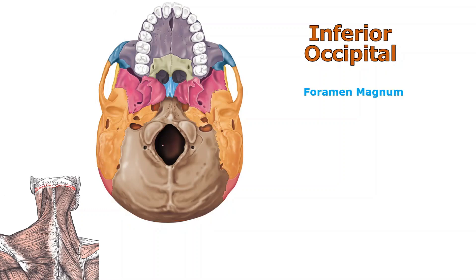The foramen magnum is pretty easy. If you translate it, it stands for 'big hole.' The foramen magnum — I've put FM inside of it — is the landmark where inside the skull we have the brainstem, and beyond the foramen magnum on the outside is what's called the spinal cord. It's the same structure, but it gets a different name once it exits the foramen magnum.